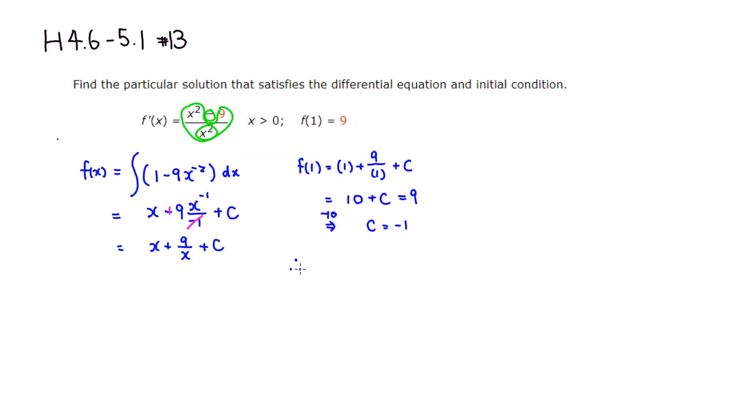Therefore, we have the complete formula for f of x is equal to x plus 9 over x, and the c came out to be negative 1. Let's type it in.